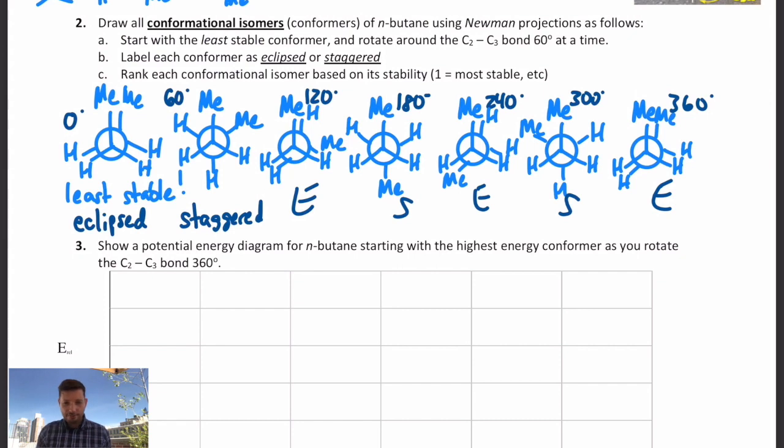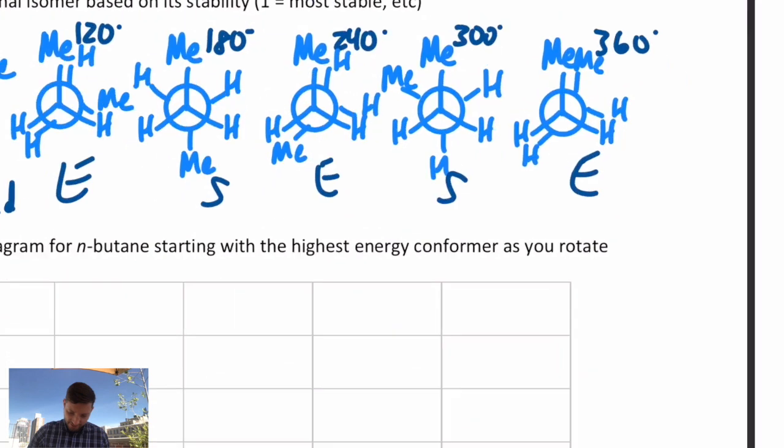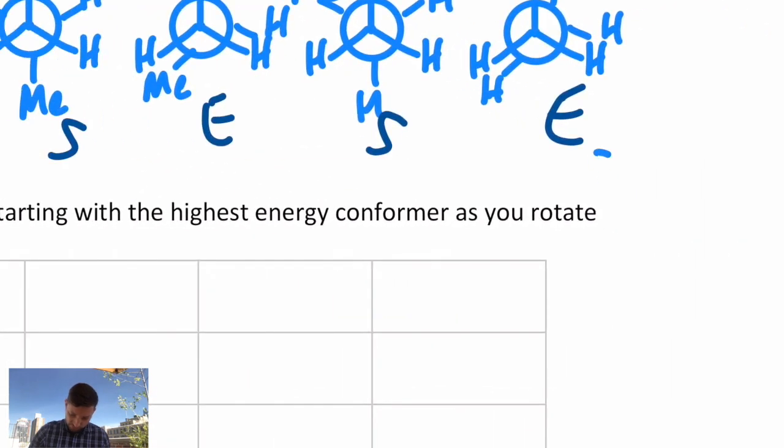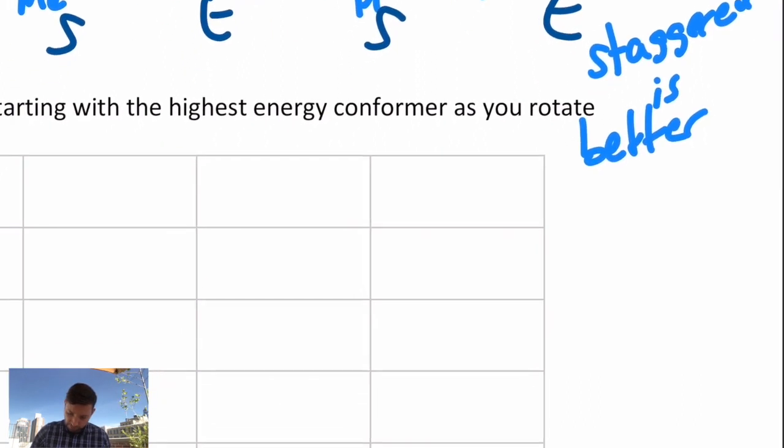And it's worth making a note, if you're ever in a staggered conformation, that is preferred to eclipsed almost always. Staggered is better, meaning more stable, than eclipsed.